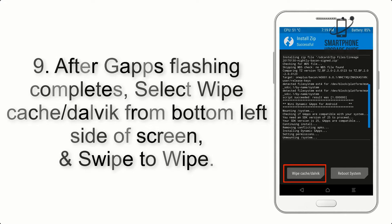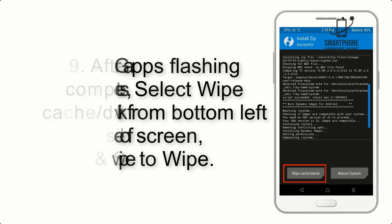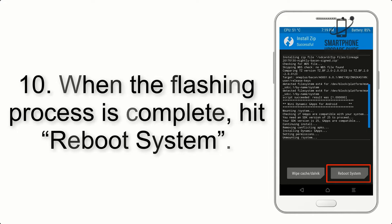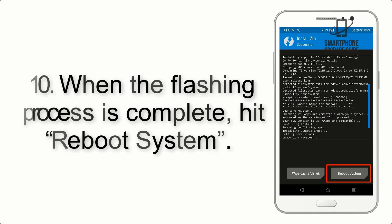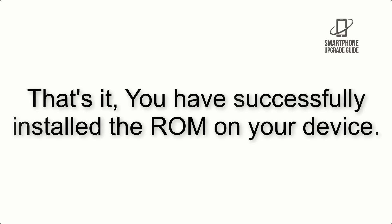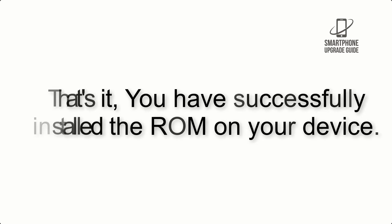Step 9: After GApps flashing completes, select Wipe Cache and Dalvik from the bottom left side of the screen and swipe to wipe. Step 10: When the flashing process is complete, hit Reboot System. That's it — you have successfully installed the ROM on your device.